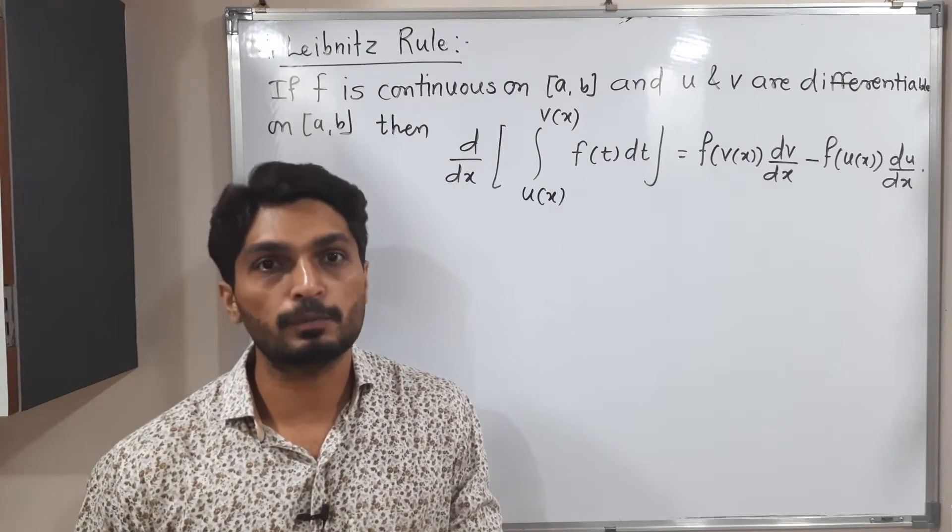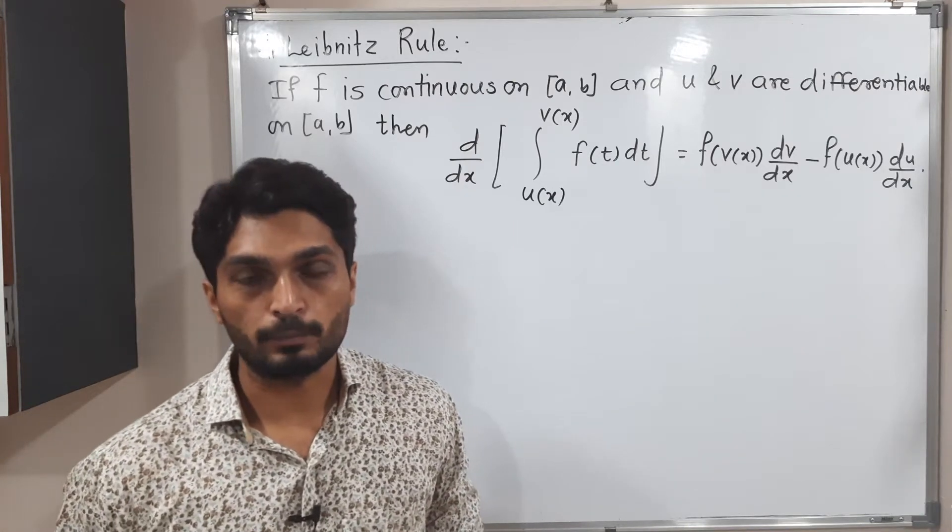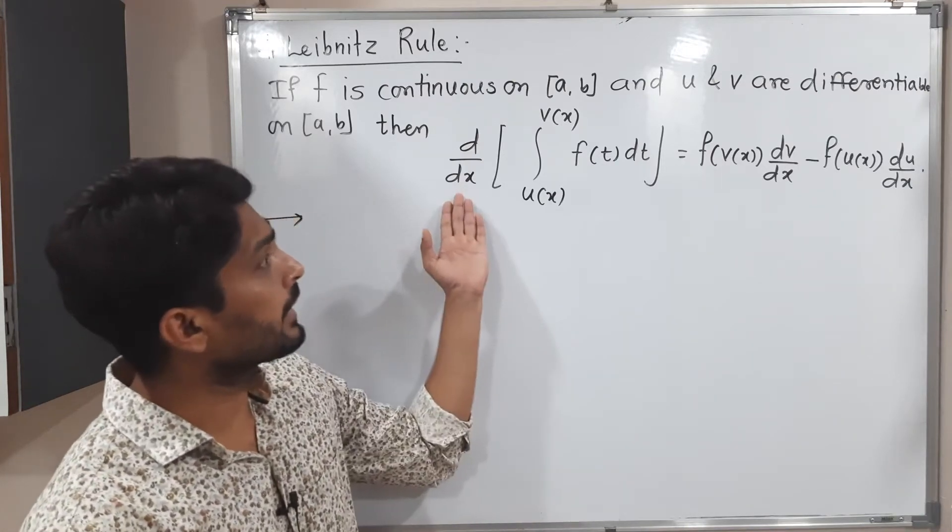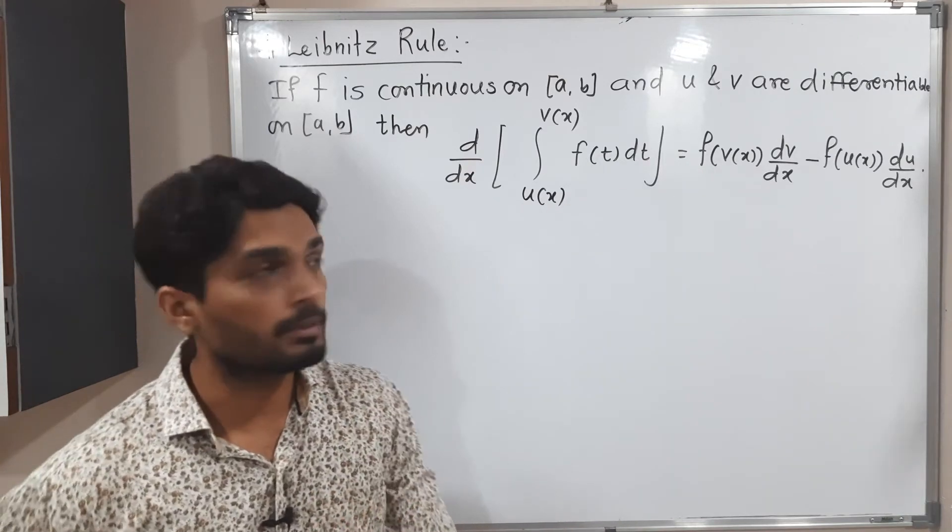So what it says, if small f is a continuous function on a closed interval [a,b] and u and v be any differentiable functions, as you can see here, these are limits of that integration. And you are taking derivative, then its value will be f of v of x.